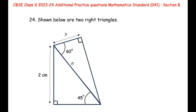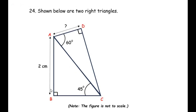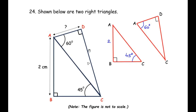Now for the OR question. We can see two right-angled triangles. I have labeled the vertices as A, B, C, D. Breaking the shape into two right-angled triangles: triangle ABC and triangle ACD. In triangle ABC, AB = 2 cm and angle C = 45°. In triangle ACD, angle D = 90° and angle A = 60°.